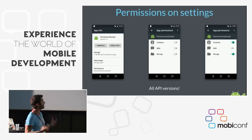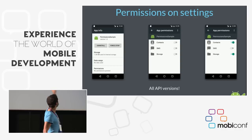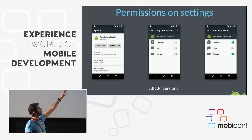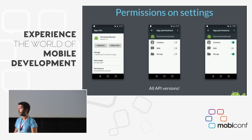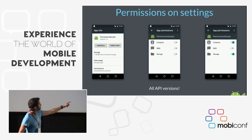Permissions on settings: we can also grant or deny permissions in the settings of each app. There's a new row when we go to the app's settings for permissions. In this screen — the permission sample app — the app is asking for three different permissions: contacts, SMS, and storage. The user can here deny or allow permissions. For example, the user has granted contacts and storage permissions but SMS is currently denied.